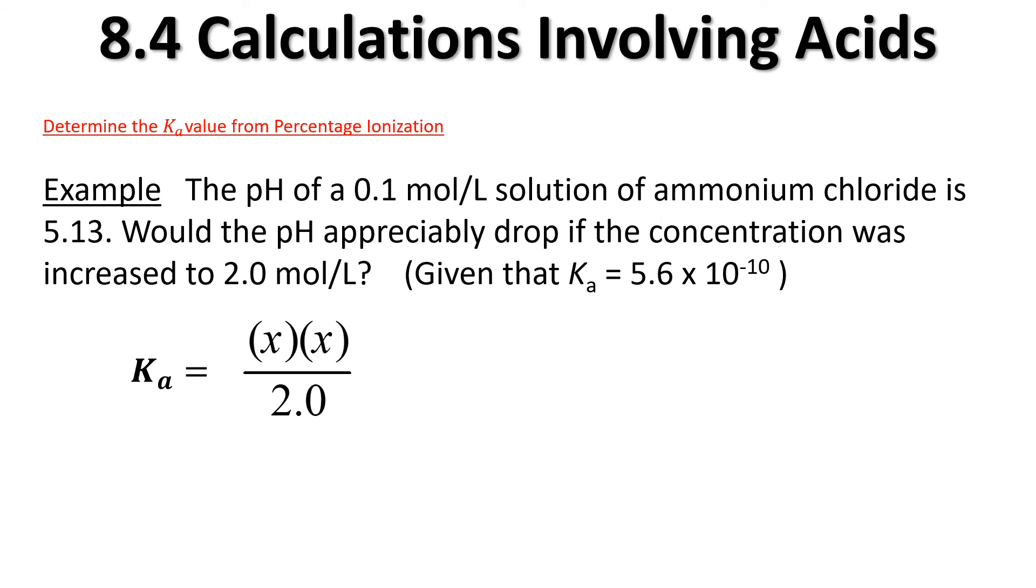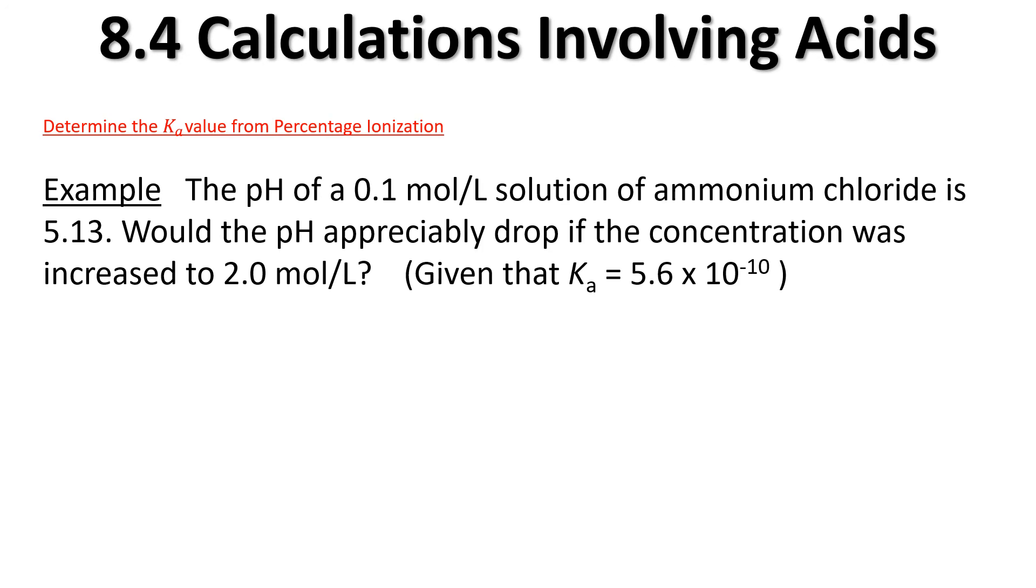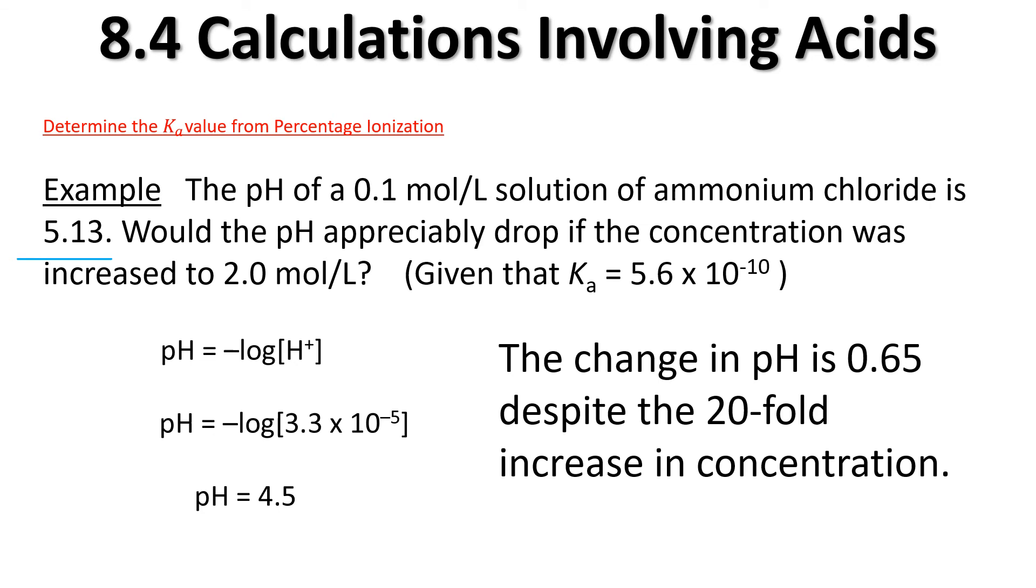Back to this, notice that I've dropped that minus x here. It's now gone. So we can proceed with the mathematics. We can plug our Ka in now, do our cross multiplying, take the square root of both sides and get your x value. What we've determined is we've got our hydrogen ion concentration here. We can go ahead and take the pH of that solution, 4.5. Now all we're going to do is compare it to the 5.13 here that we were given earlier. It's only really a slight change, even though we had a massive increase in our hydrogen ion concentration from 0.1 molar up to 2.0 molar.